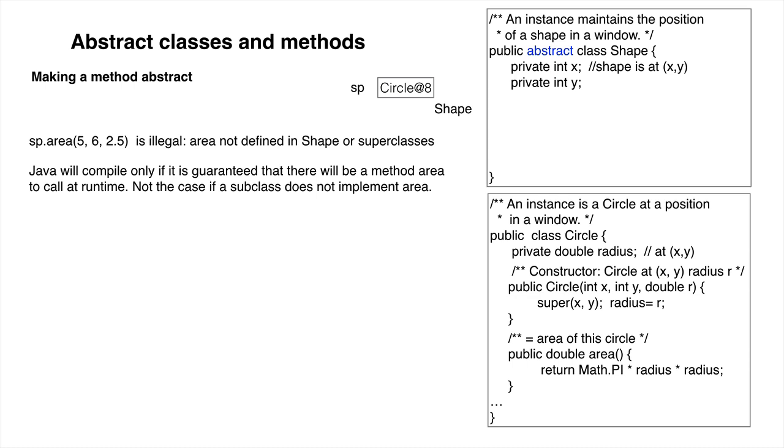So that we don't have to cast down to a subclass to call method area, we put method area in class Shape. This method should not be called since there is no known area in Shape, so we have it throw an exception. But there's still a problem.